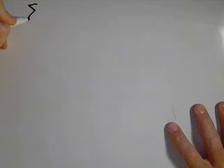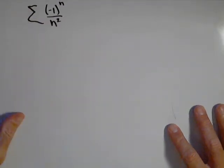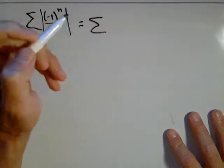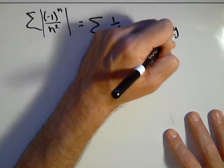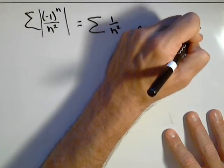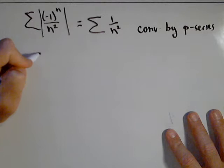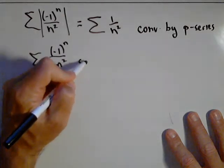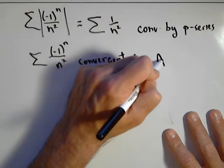I also wanted to look at an alternating series where this test works. The series (-1)^n / n² is a perfect example: if we take the absolute value of its terms, we get the series 1/n², which we know is convergent by the p-series test — and we could also show it with the integral test. So (-1)^n / n² is convergent, and in fact it's absolutely convergent, by the absolute value test.